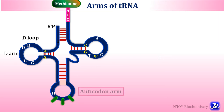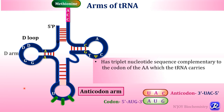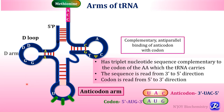The anticodon arm is opposite to the acceptor arm, is 5 base pairs long, and contains a triplet nucleotide sequence complementary to the codon of the amino acid the tRNA carries. For example, the tRNA specific for methionine has anticodon UAC read from 3' to 5', which base pairs with the codon AUG on messenger RNA read from 5' to 3'. The anticodon-codon pairing is complementary and antiparallel. This gives tRNA dual specificity: recognizing the mRNA codon and accepting the specific amino acid coded by that codon.